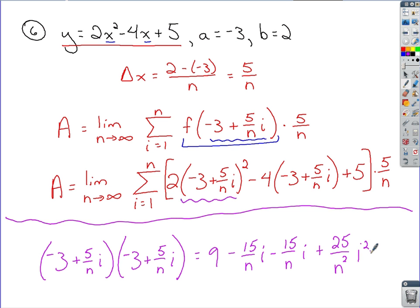So collecting some like terms there, put these together. That'd be negative 30 over n i. That becomes this part, which when I substitute that back in, all this scratch work I've done, I've got this 2 that will be distributed to all this work. So let's see how that looks as we transfer it over.